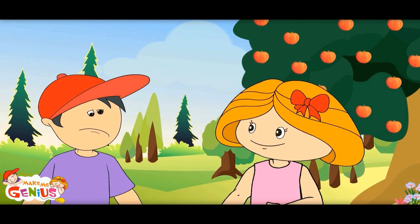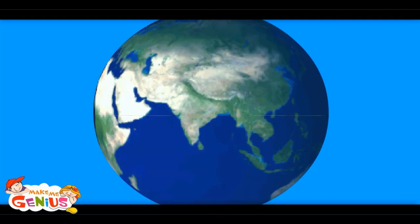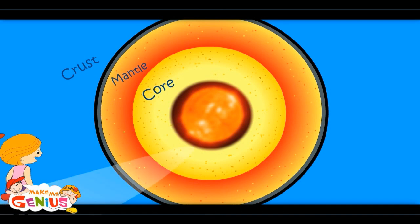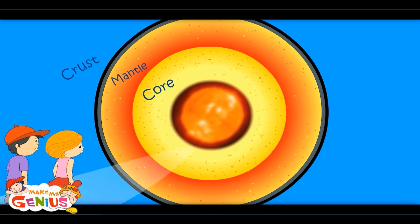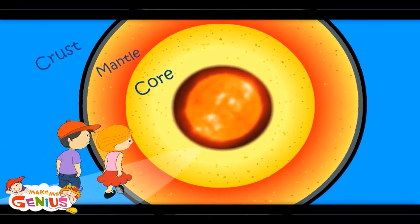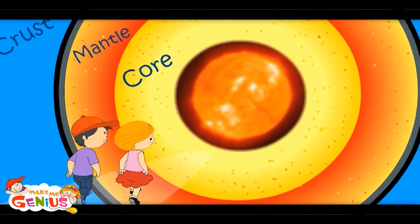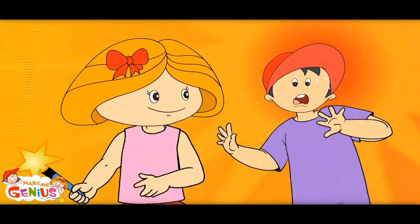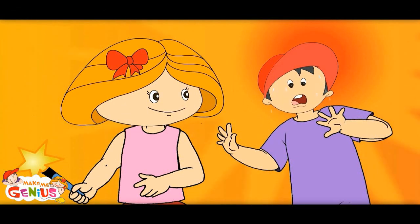We will have to go to the Earth's inside. Have a look. This is Earth from outside. Earth is divided into three parts: its crust, mantle, and core. We have crossed Earth's crust and now we are passing through the mantle. It is very hot in here. I can't go further.